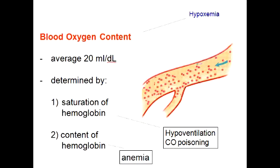How much oxygen can 1 gram of hemoglobin bind? 1 gram of hemoglobin can bind 1.34 milliliters of oxygen. The normal amount of hemoglobin in the blood is around 15 grams per deciliter. So based on this information, the oxygen binding capacity would be 15 times 1.34, which comes out to roughly 20.1 milliliters of oxygen per deciliter.